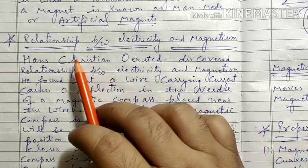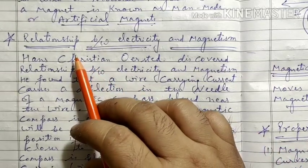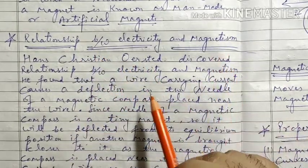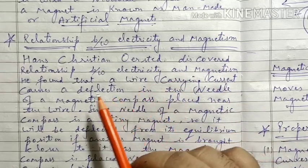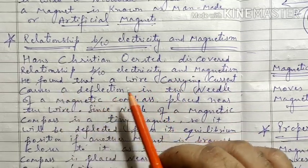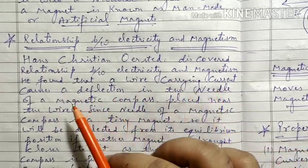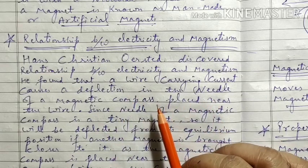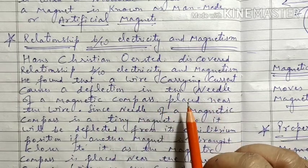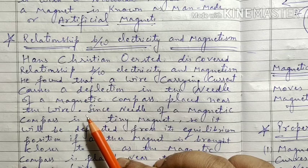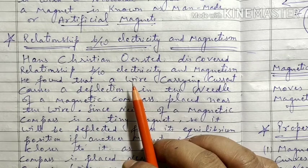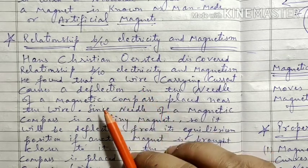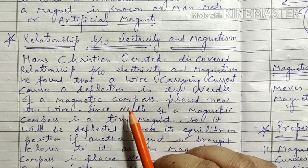Then he established a relationship between electricity and magnetism. He found that a wire carrying a current caused deflection in the needle of a magnetic compass placed near the wire. He observed the deflection of the compass needle when current flowed through the wire.